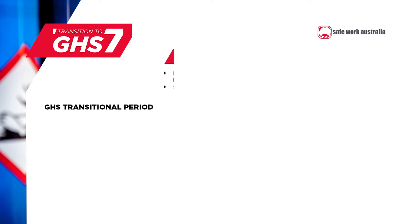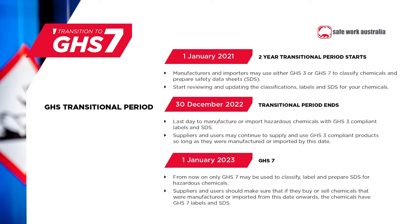The transition to GHS7 is happening over two years. It started on 1 January 2021 and it will end on 30 December 2022. The transition is mainly for manufacturers and importers of chemicals — it gives them time to prepare new classifications, labels, and safety data sheets for their chemicals. During the transition, manufacturers and importers can use either GHS3 or GHS7. From 1 January 2023, only GHS7 can be used.